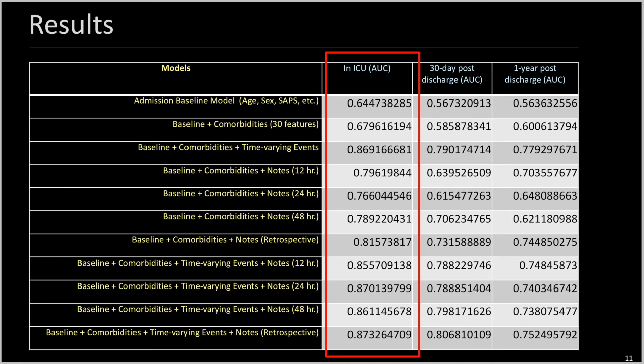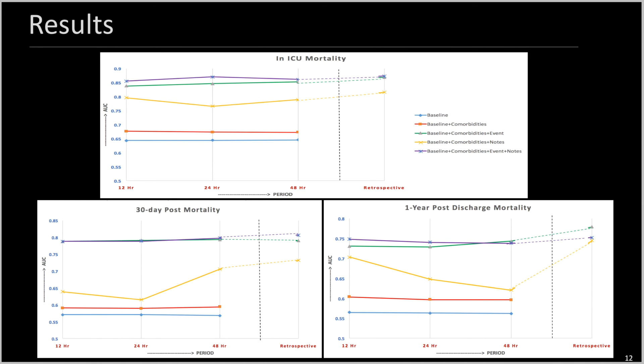The AUC for in-hospital mortality always provides better performance than the 30-day and one-year post-discharge predictions, because of the availability of clinical notes during in-hospital stay. When plotting the various model results in a chart, it clearly shows that retrospective results always outperform the rest, for obvious reasons as pointed out by the previous work.